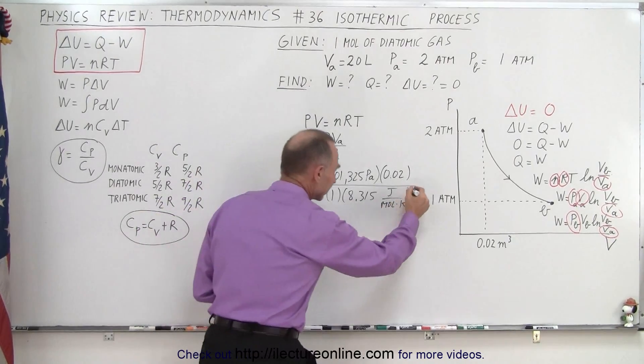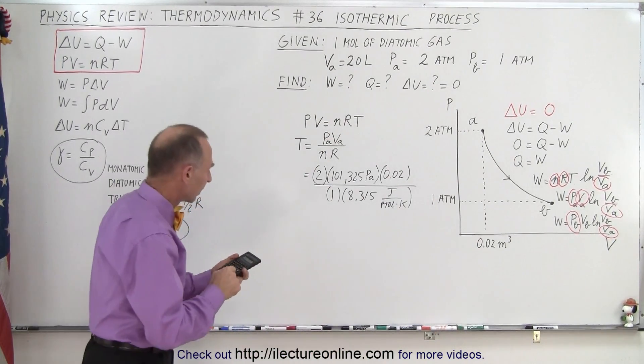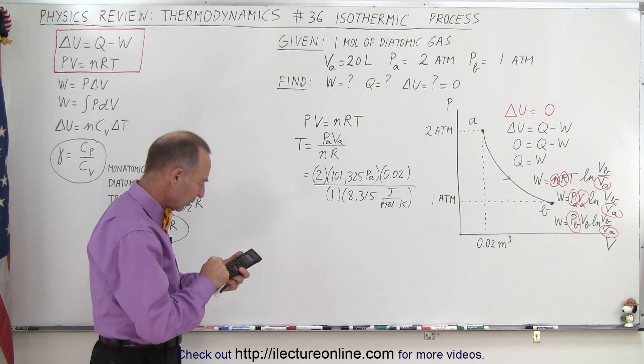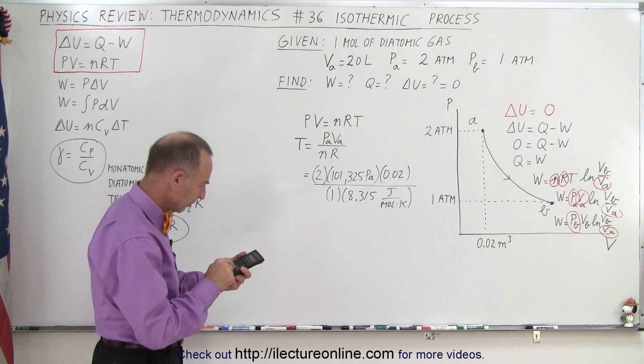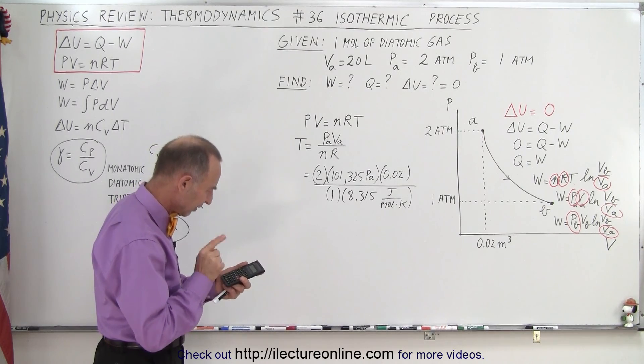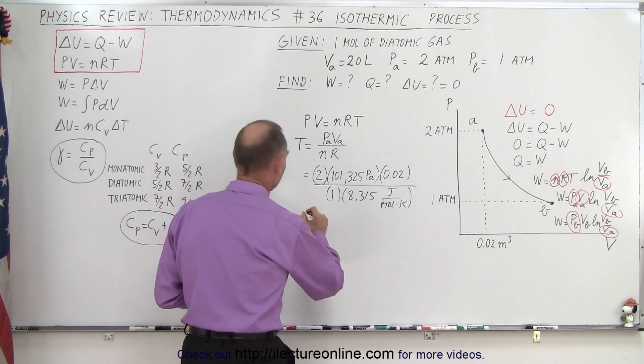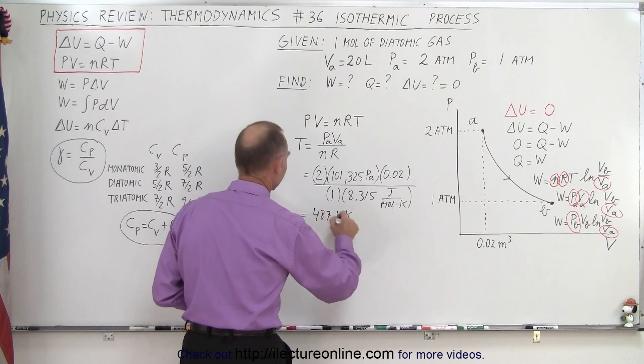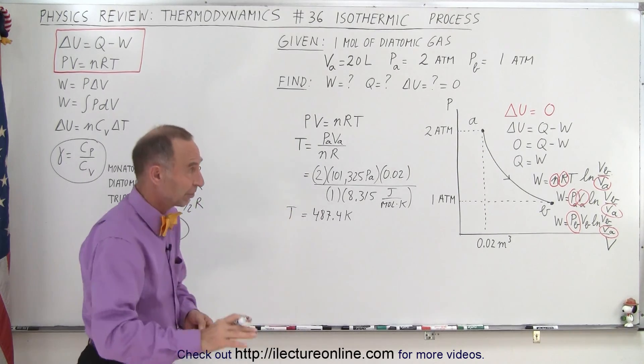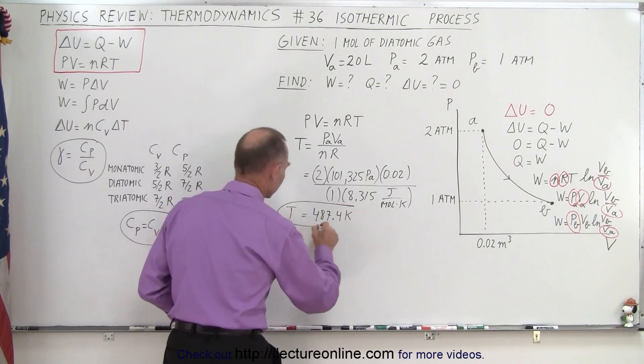Okay, so 101,325 times 2 times 0.02 divided by 8.315, and it's 487.4 Kelvin. So that's equal to 487.4 Kelvin for the temperature. And of course, that's the same everywhere in the process because it's an isothermic process. The temperature does not change.